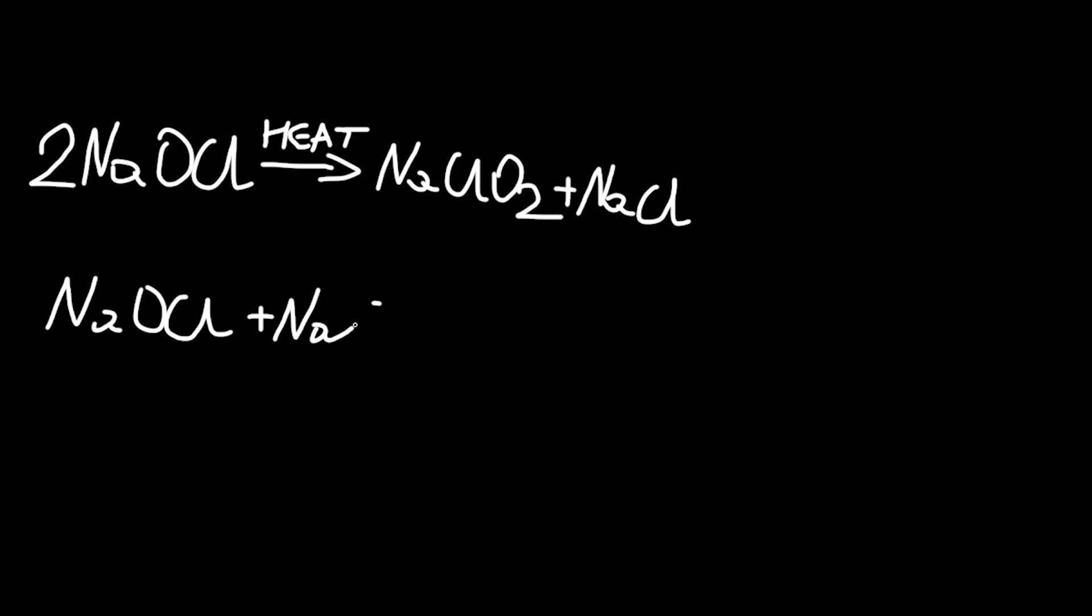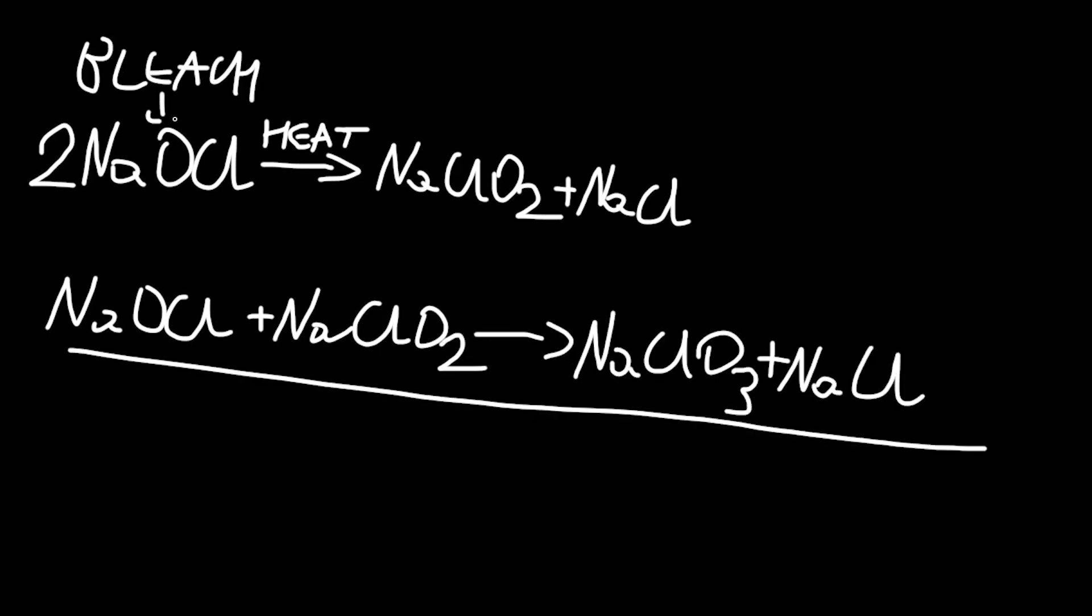What's happening here is the disproportionation of sodium hypochlorite, which is an extremely strong oxidizer and is the most powerful out of the chlorate family. Under the heat it basically breaks down into sodium chloride and sodium chlorate, second of which we of course want.